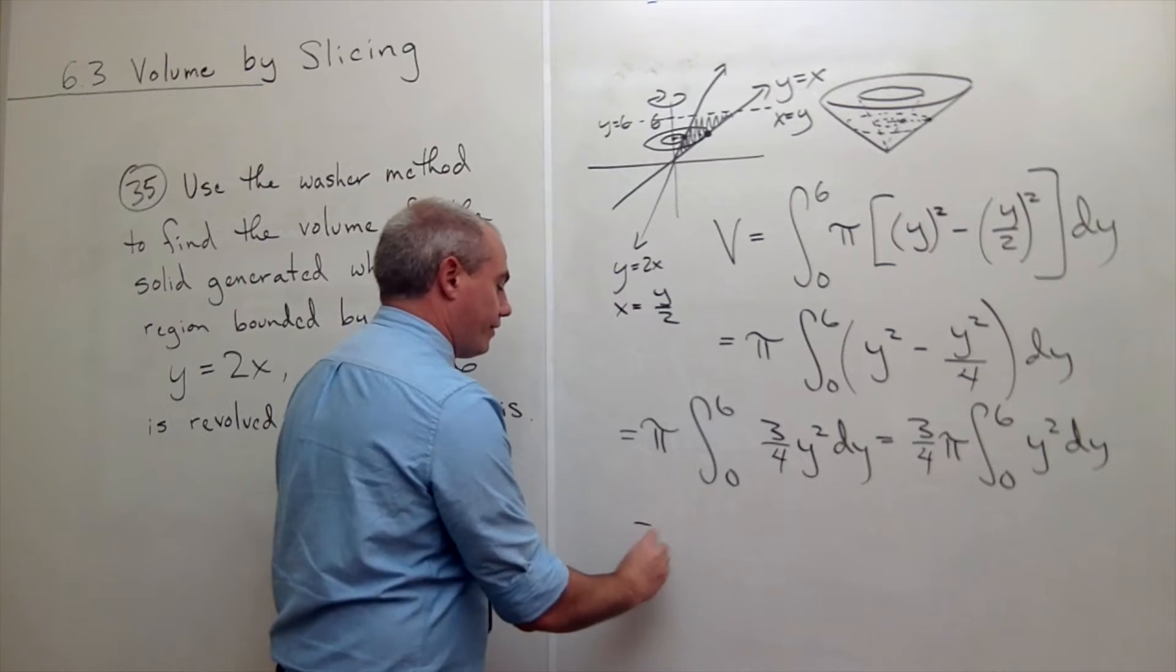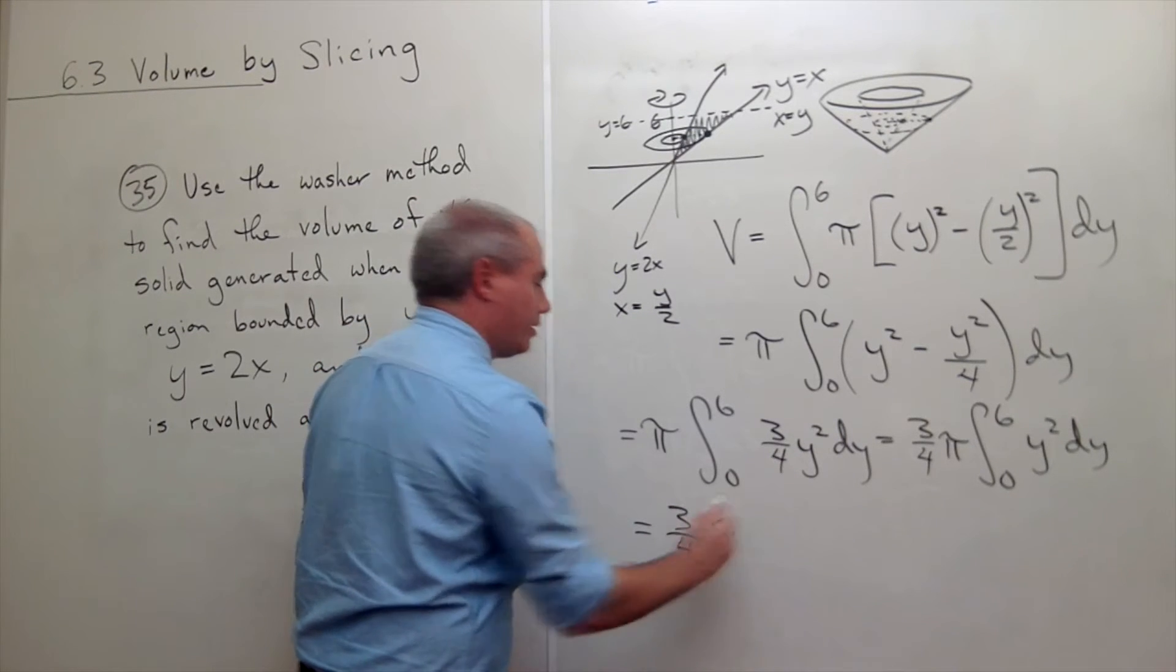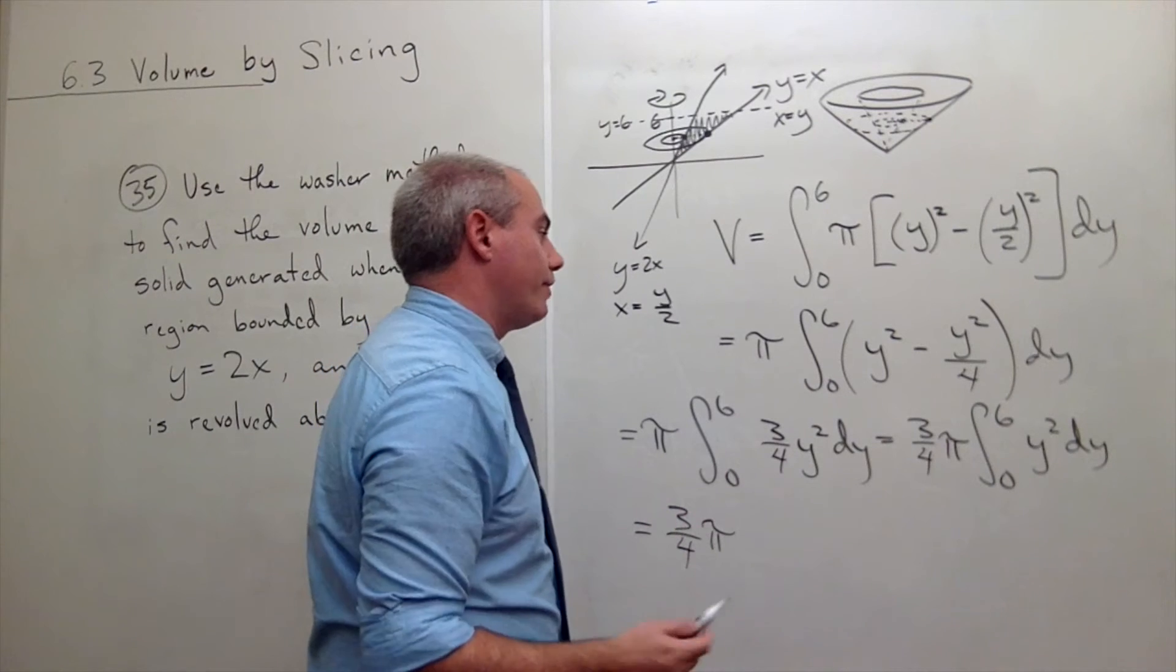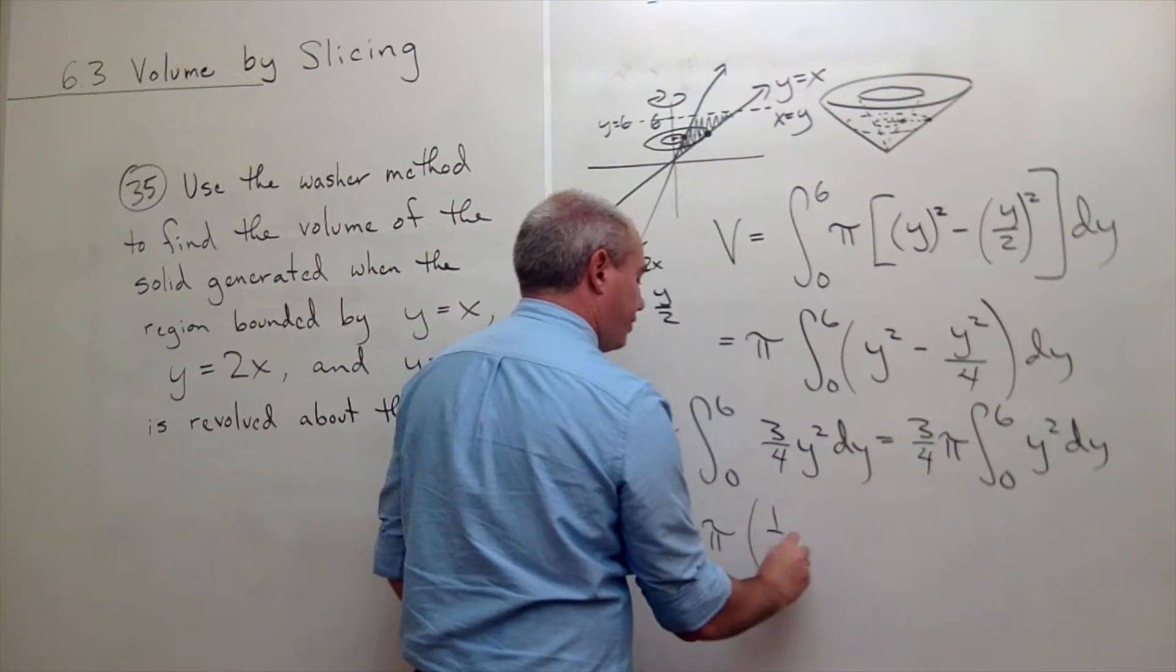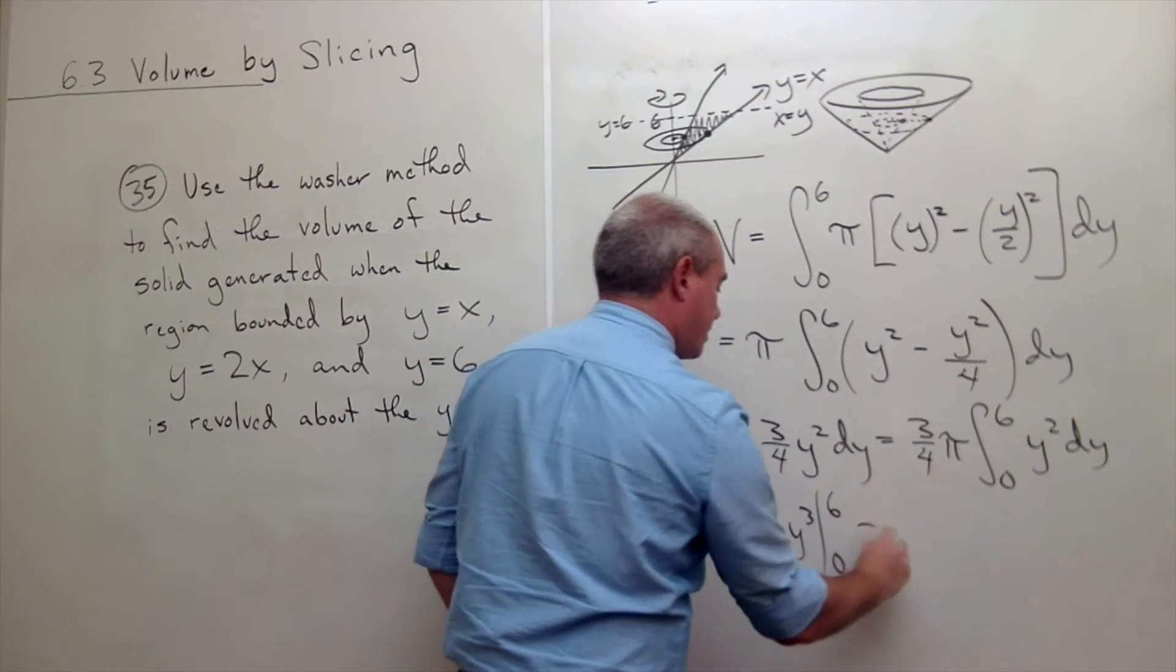It's an easy antiderivative. I still have 3 fourths pi times the antiderivative of y squared is 1 third y cubed evaluated from 0 to 6.